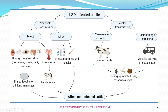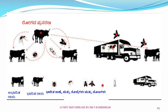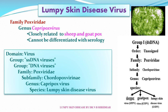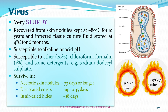Intrauterine transmission can also affect newborn calves, as recent research suggests. Vectors, especially biting flies and mosquitoes, transmit the disease to the greatest extent. The virus belongs to the family Poxviridae, genus Capripoxvirus, and is closely related to sheep and goat poxvirus; it cannot be differentiated by serology. It is a DNA virus belonging to the subfamily Chordopoxvirinae.